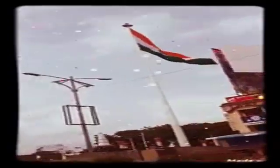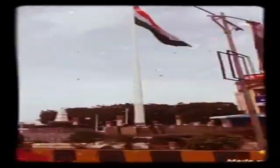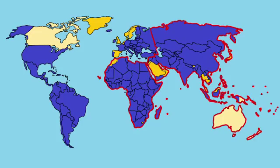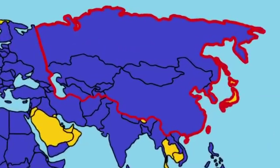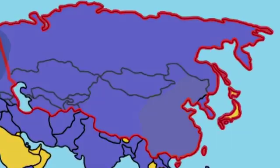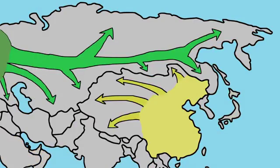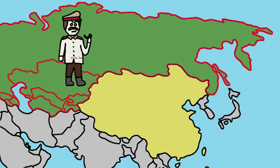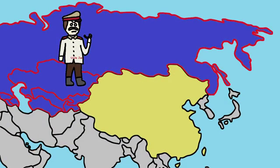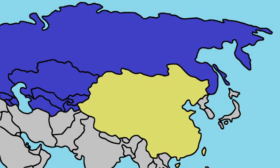It was adopted in its present form during a meeting of the Constituent Assembly held on July 22, 1947, and it became the official flag of the Dominion of India on August 15, 1947. The flag was subsequently retained as that of the Republic of India. In India, the term tricolour — Tiranga — almost always refers to the Indian national flag.